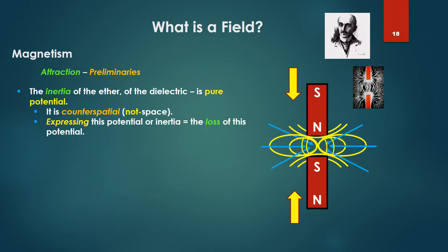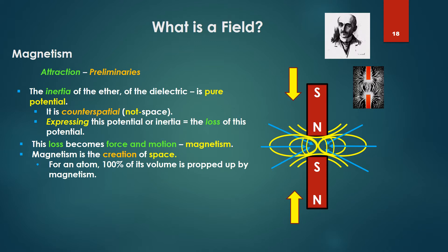Let's talk attraction — magnetic attraction. The inertia of the ether, of the dielectric, is pure potential. It is counter-spatial — not in space as we understand space, not in this table-and-chairs space. Expressing this potential or inertia is the loss of this potential. The loss becomes force and motion, and this is magnetism. Magnetism is the creation of space. For an atom, 100% of its volume, argues Wheeler, is propped up by magnetism. Dielectricity, being counter-spatial, is impelled with increased capacitance within the atomic structure, and magnetism is expelled without.